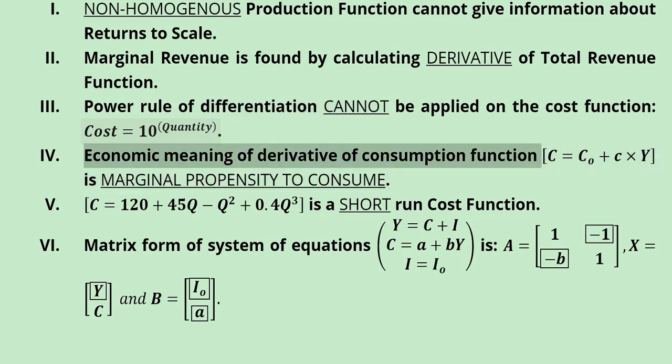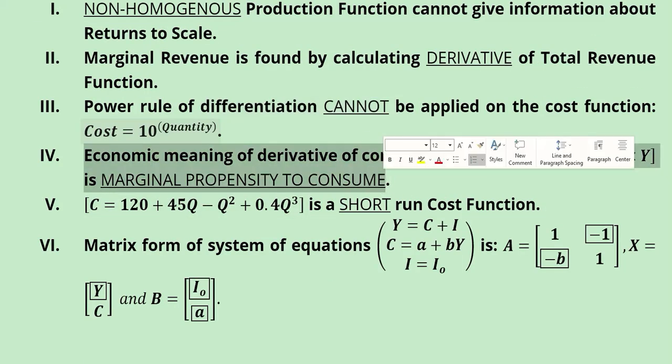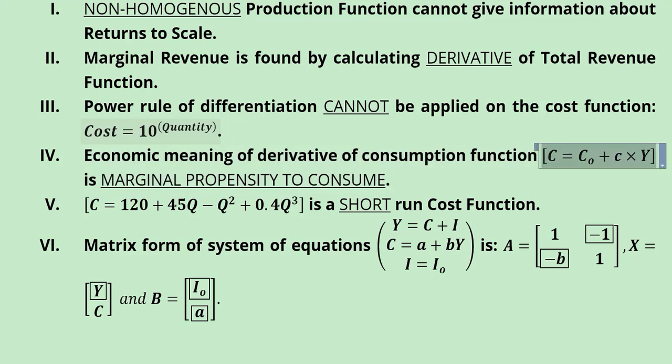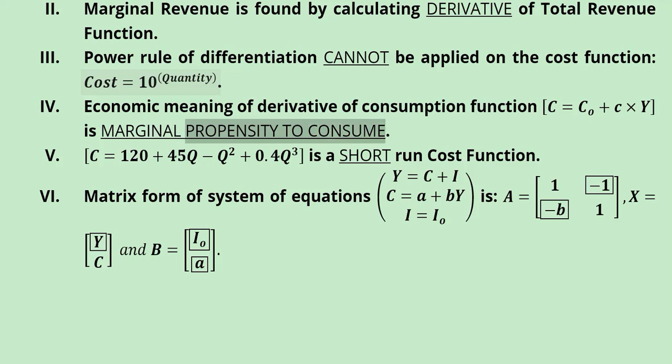Then the economic meaning of the derivative of the consumption function is asked. The consumption function has autonomous consumption as a constant, so its derivative becomes zero. Here y is the variable, so taking the derivative with respect to y reduces to just the small c, which is the marginal propensity to consume — MPC. That is the term to place in the blank.